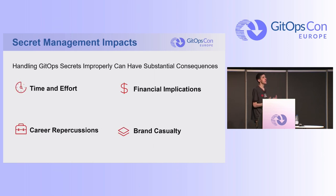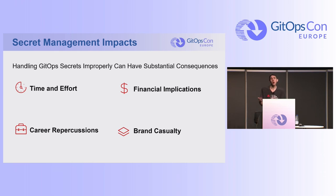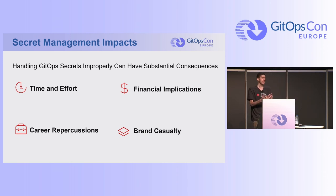What are some implications of improper secrets management? Number one, time and effort. If you don't do it or do it wrong and there's a breach, there's going to be a lot of pain to unwind. You'll have to fix your Git repository — if you're working in GitHub or GitLab, you've got to call them to help scrub the data. If you have forks, all your forked repositories are now compromised. It's a lot of work to come back from a breach.